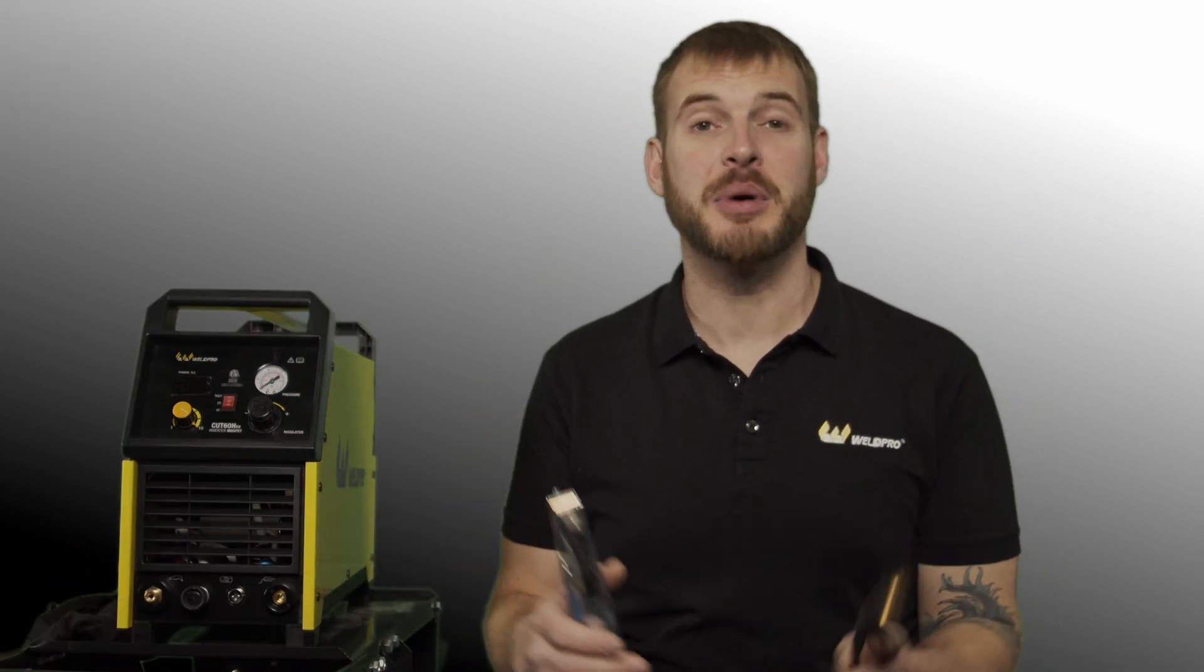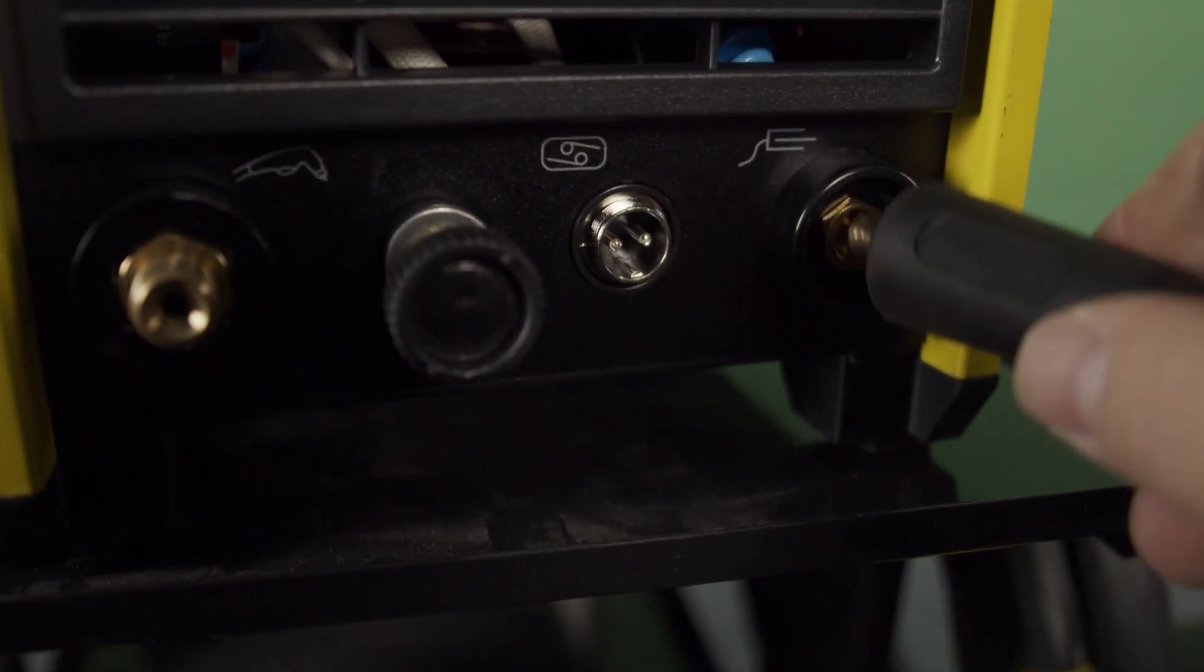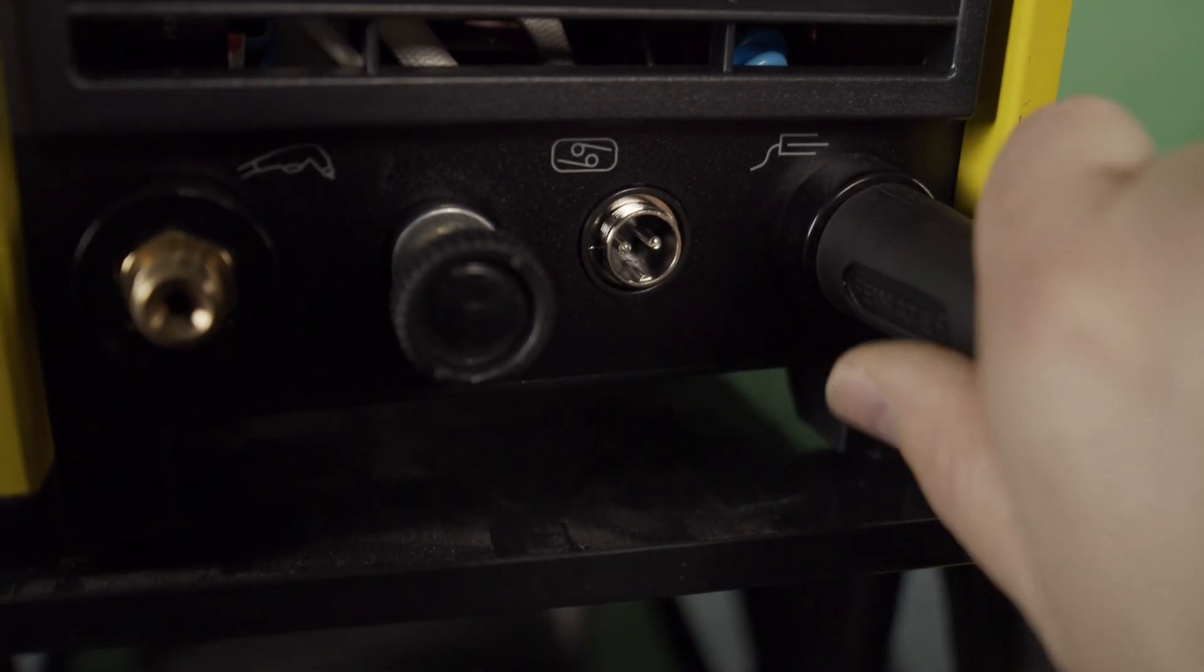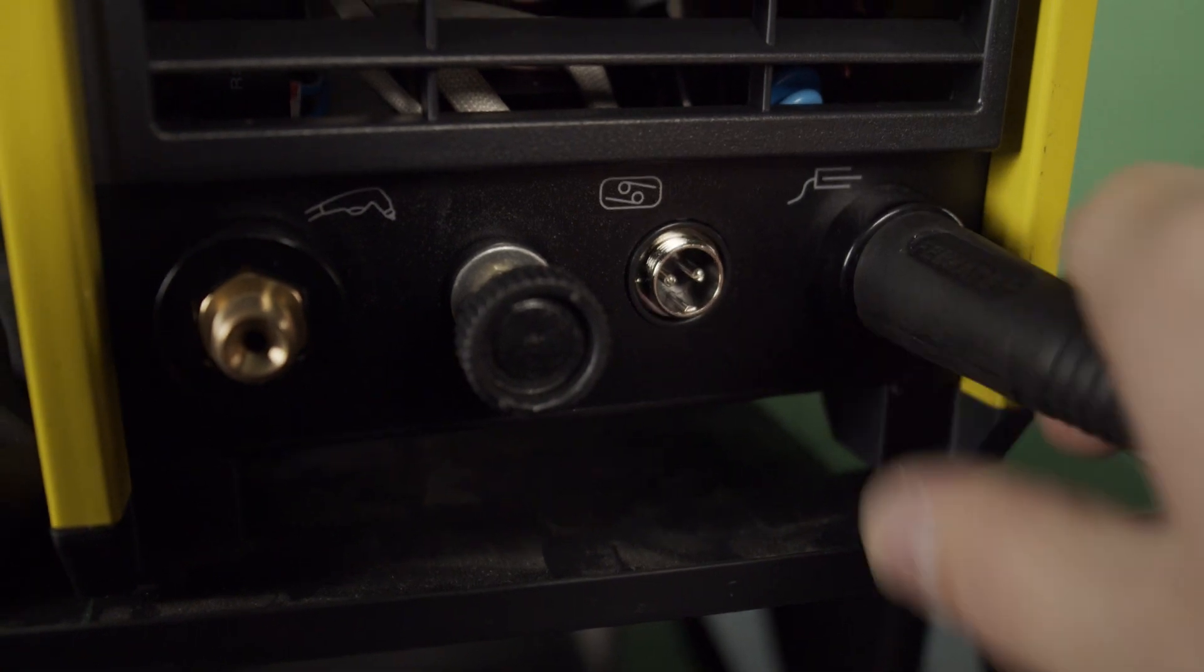The first thing we're going to do to get started is to hook up the ground clamp. We do this by taking the Dents connector, inserting it into the lug on the front of the plasma cutter, and rotating about 90 degrees clockwise.